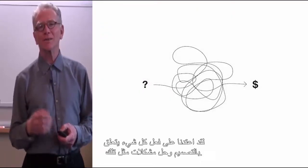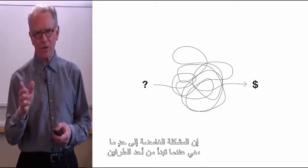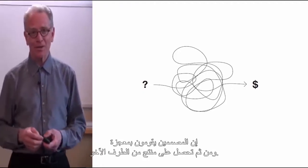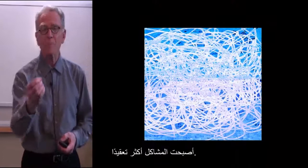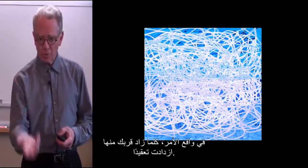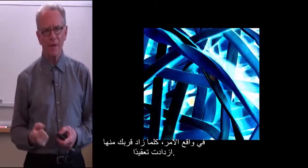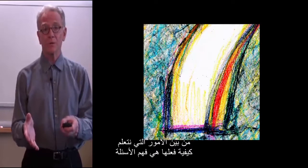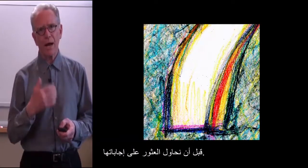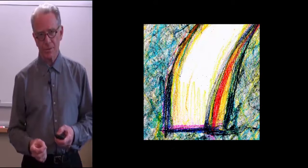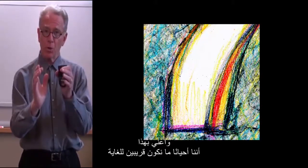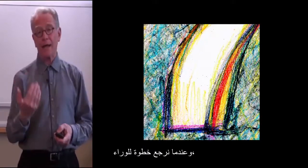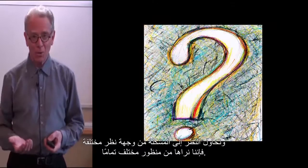We used to go about designing and solving problems like this — a fairly ambiguous problem where you start off at one end, designers do something magical, and you get a product on the other side. But now things are quite different. The problems are more complicated; in fact, the closer you get to them, the more complicated they become. One of the things we're learning how to do is to understand the questions before we try to find the answers. Sometimes we look at something through a straw, not through a wide lens. And when we step back and try to look at a problem differently, we see it in a whole different light.